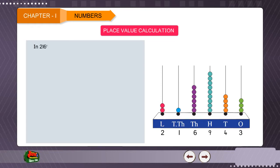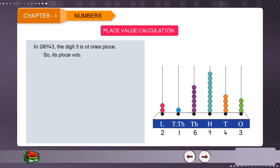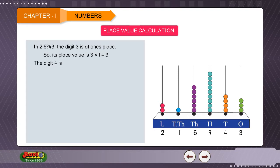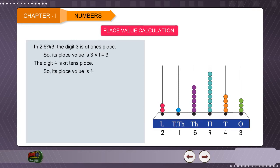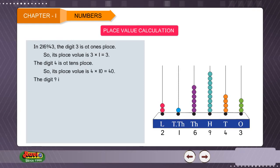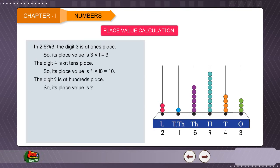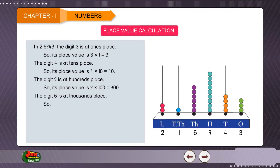In 2,16,943, the digit 3 is at the 1's place, so its place value is 3 × 1 = 3. The digit 4 is at the 10's place, so its place value is 4 × 10 = 40. The digit 9 is at the 100's place, so its place value is 9 × 100 = 900. The digit 6 is at the 1000's place.